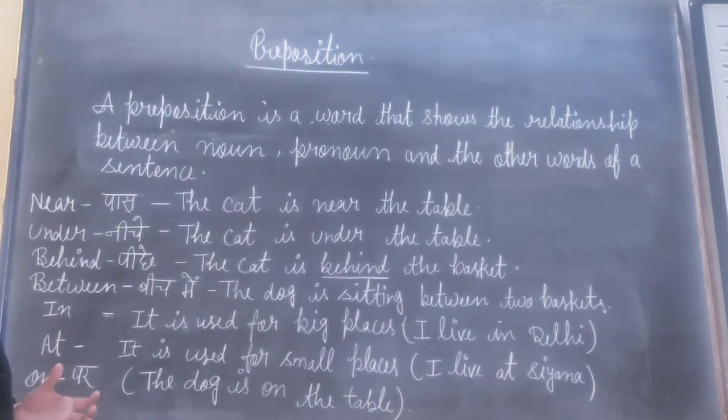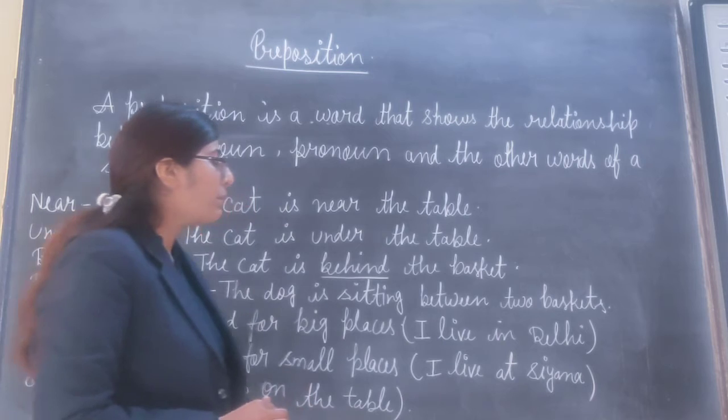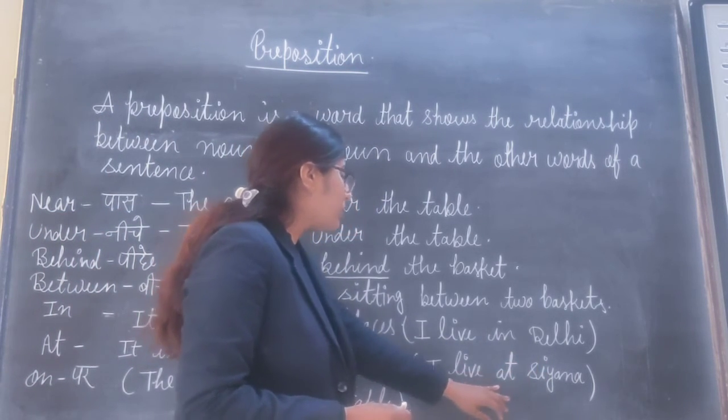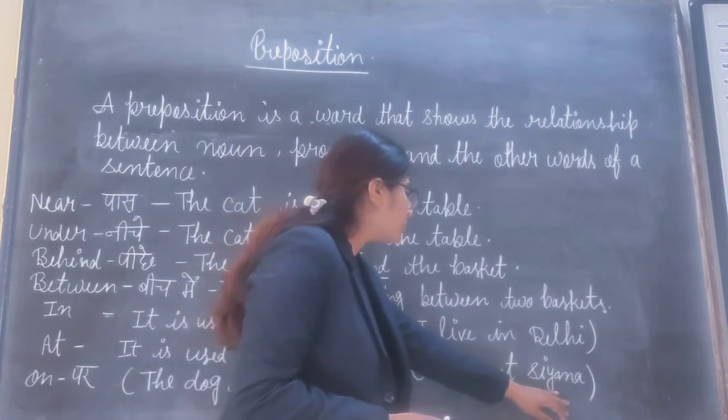At is used for small places. For example, I live at Sapna.